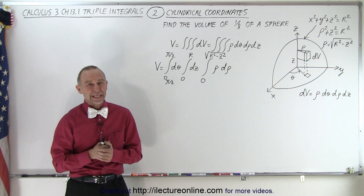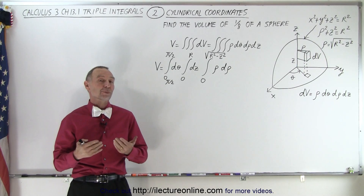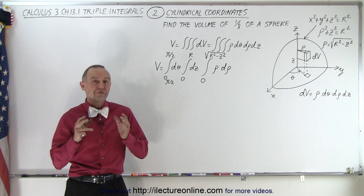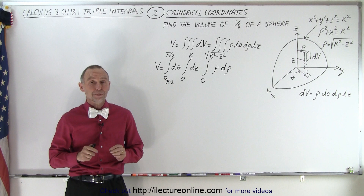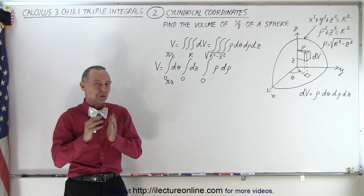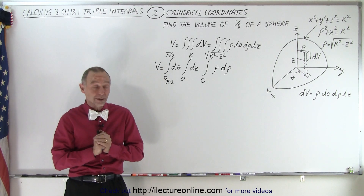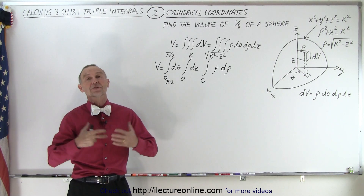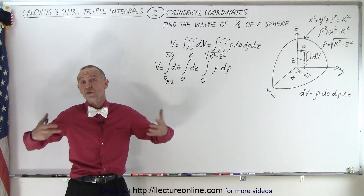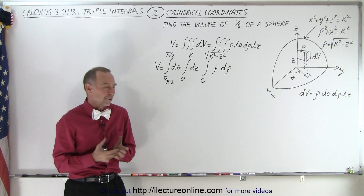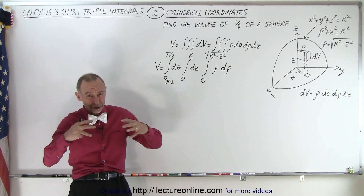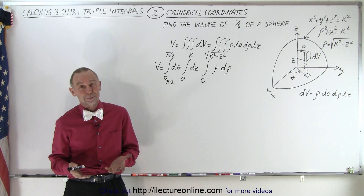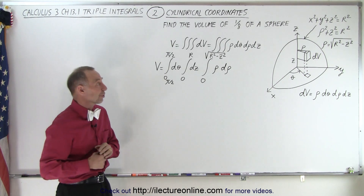Welcome to iLecterOnline. In this second video in this series, we're going to find exactly the same thing as we did in the first video: the volume of 1/8 of a sphere. In the first video we used spherical coordinates, and here we're going to use cylindrical coordinates. In a future video we'll use Cartesian coordinates to show you that you can use any coordinate system. However, when finding the volume of a spherical object, you're probably better off using spherical coordinates, but it can be done in the others, and that's what we're trying to show you.